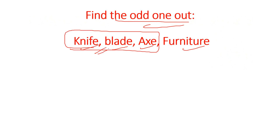Find the odd one out: Knife, Blade, Axe, Furniture. Clearly, knife, blade, and axe can all be used as cutting tools, but Furniture is different — it cannot be used as a cutting tool. So Furniture is the odd one out.